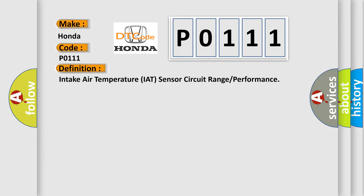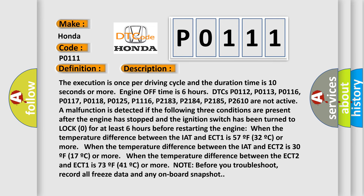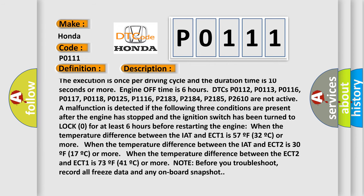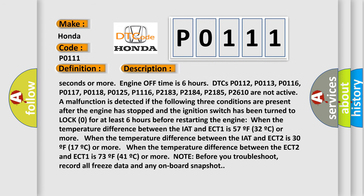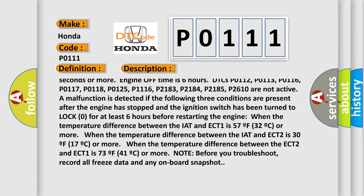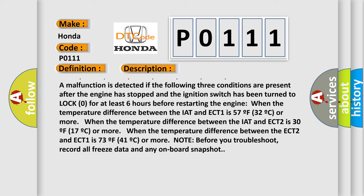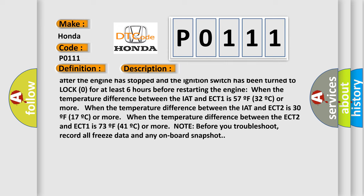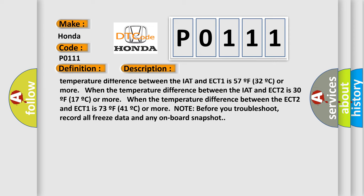Here is a short description of this DTC code. The execution is once per driving cycle, and the duration time is 10 seconds or more; engine off time is 6 hours. Related DTCs include P0112, P0113, P0116, P0117, P0118, P0125, P1116, P2183, P2184, P2185, and P2610. A non-active malfunction is detected if the following three conditions are present after the engine has stopped and the ignition switch has been turned to lock zero for at least 6 hours before restarting the engine.